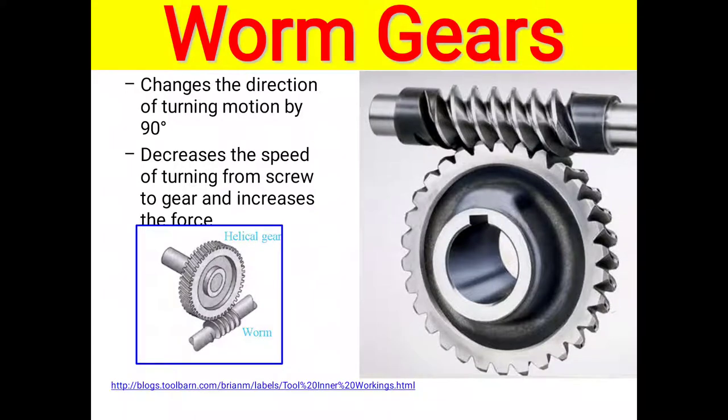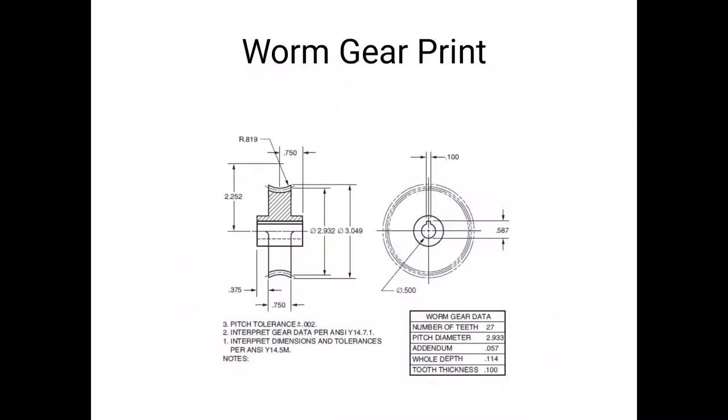Worm gear print socks. Here is shown their pitch tolerance. Interpret gear data as per analysis. Interpret dimensions and toleration per ANSI: 45 millimeter, number of teeth 27, pitch diameter 2.93.